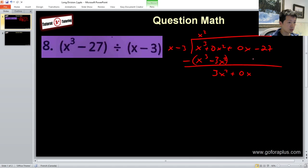Now I'll drag down the plus 0x. So I'll have plus 3x, then I'll get 3x squared, and 3x times minus 3 will be minus 9x, and I need to subtract that. That will give me 9x, and then I'll drag down the minus 27.